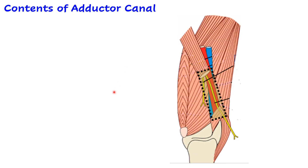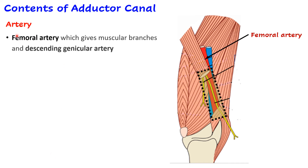Contents of the adductor canal: the main function is to allow passage of femoral vessels from the femoral triangle to the popliteal fossa, which is located behind the knee joint. The femoral artery is the main artery. It gives a few muscular branches in the canal and also the descending genicular artery, which goes down to the knee joint and participates in the anastomosis around the knee.